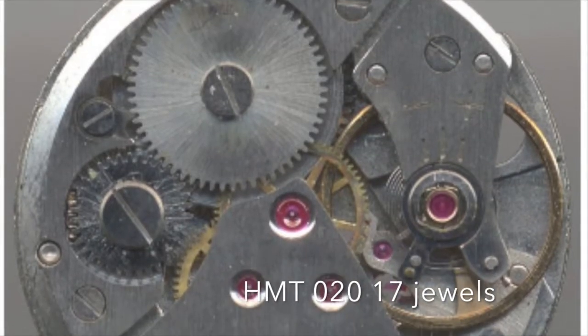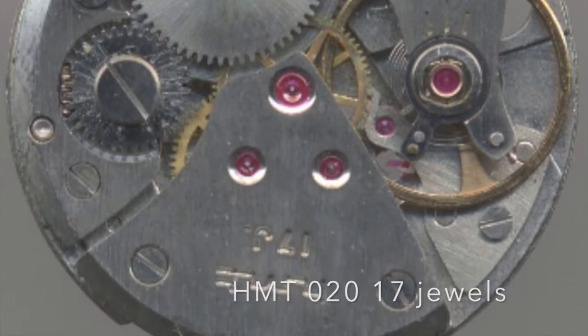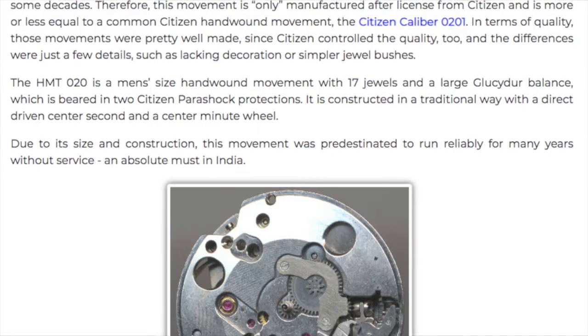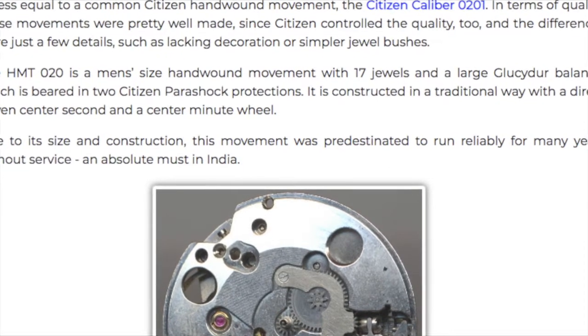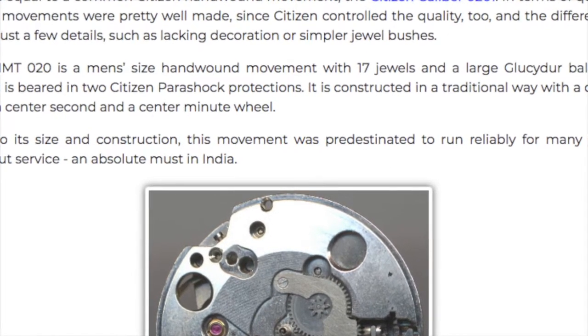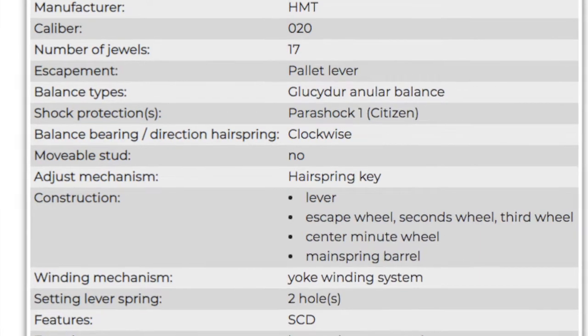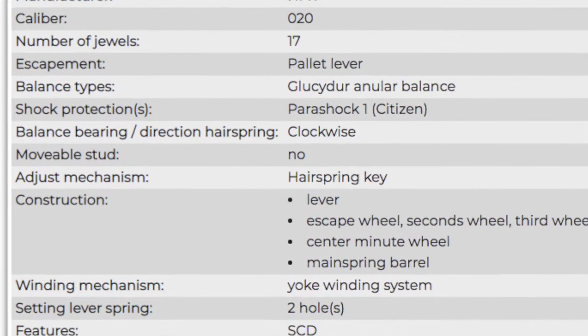Let's pick up the movement over here. As you can see, the movement is an HMT 020 17 jewels movement. The movement is actually based on a Citizen caliber 0201 and is a hand-wound movement with 17 jewels and it has kind of a pallet lever with clockwise hairspring key.